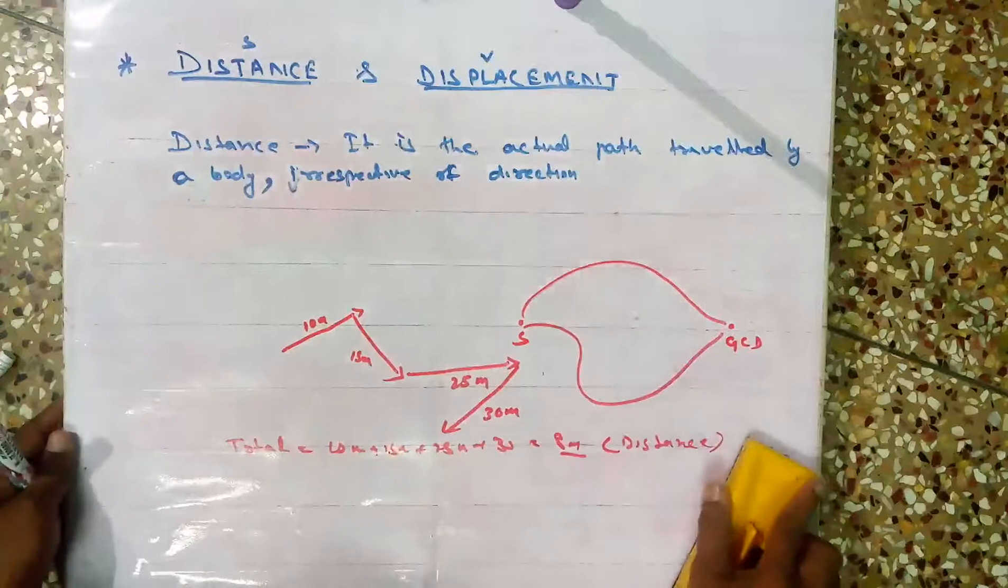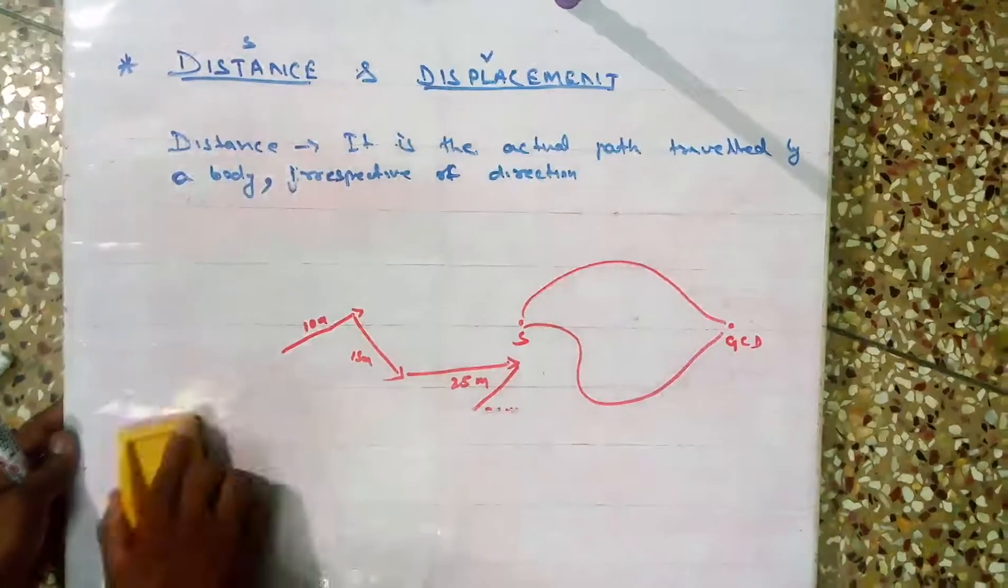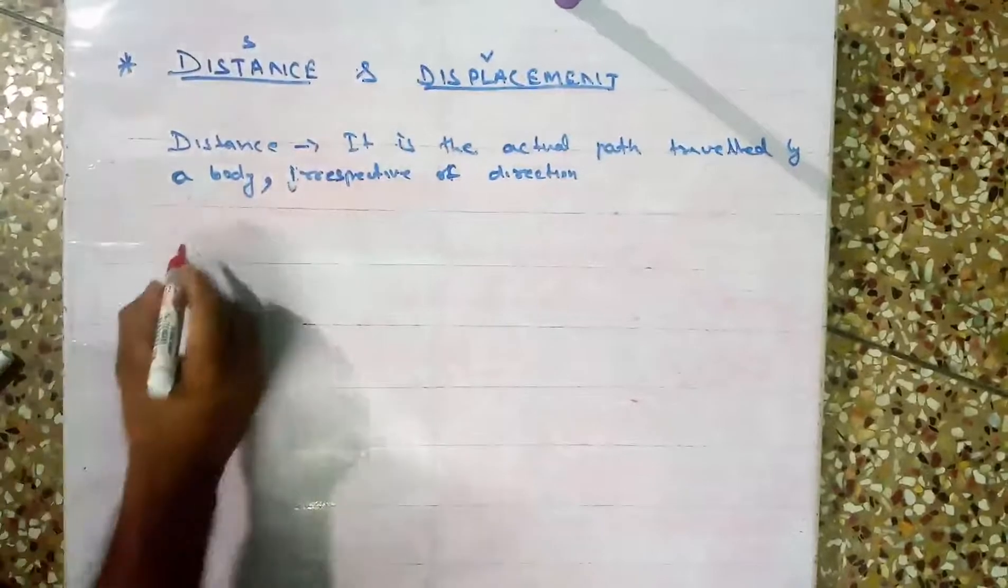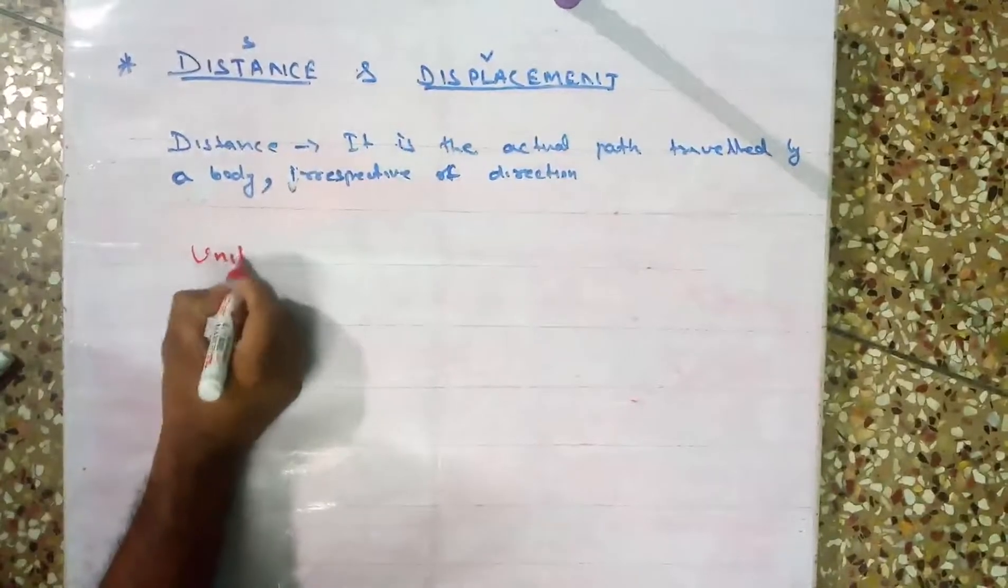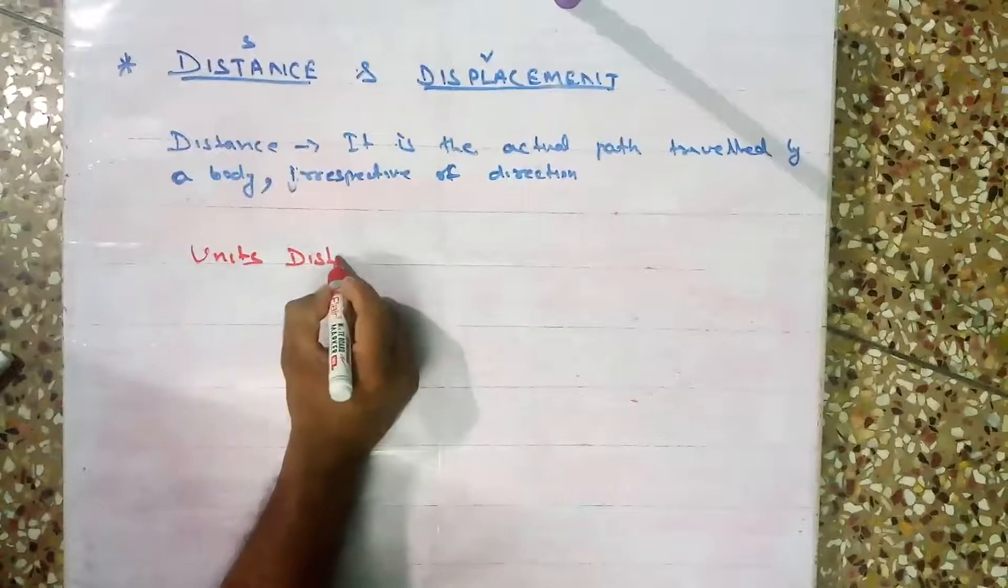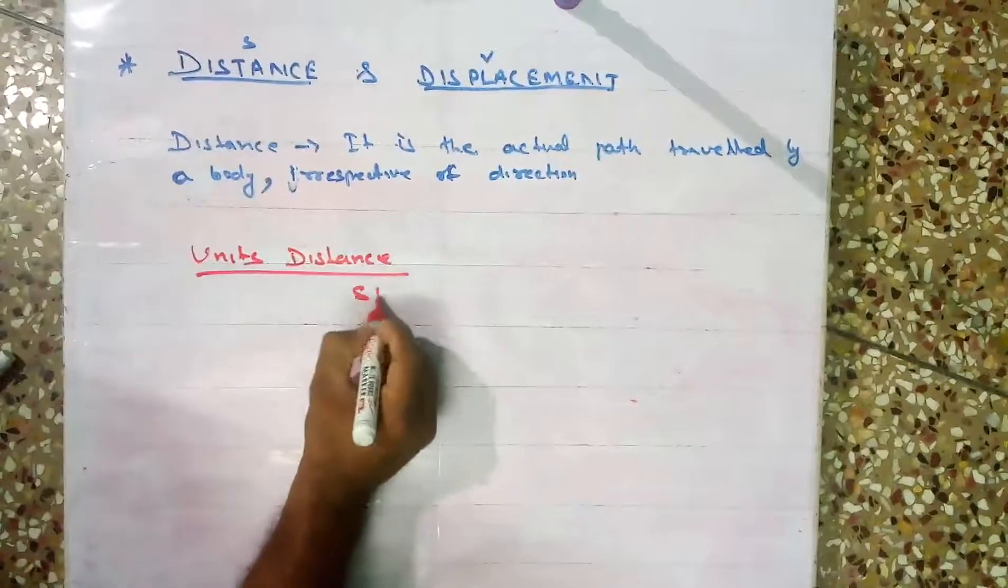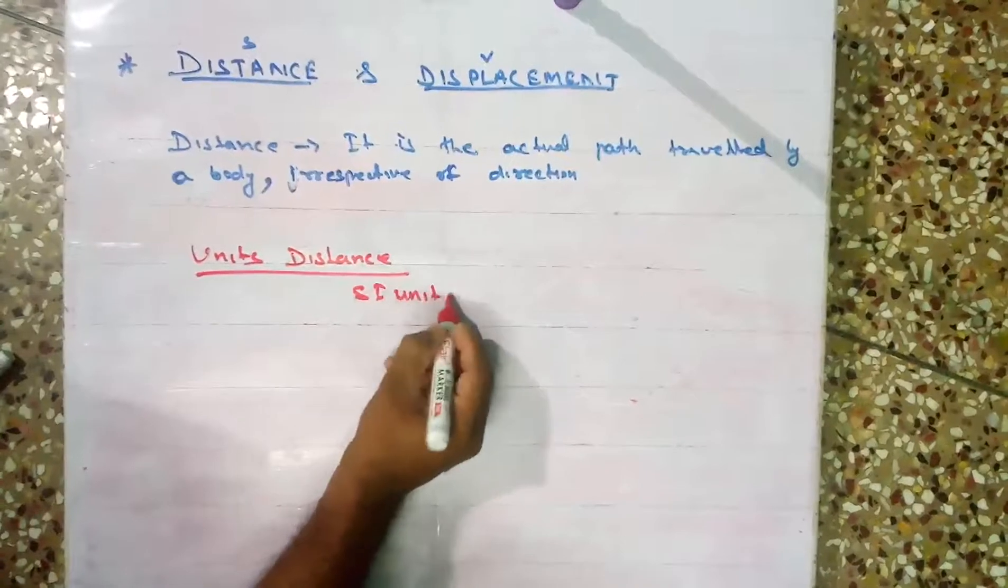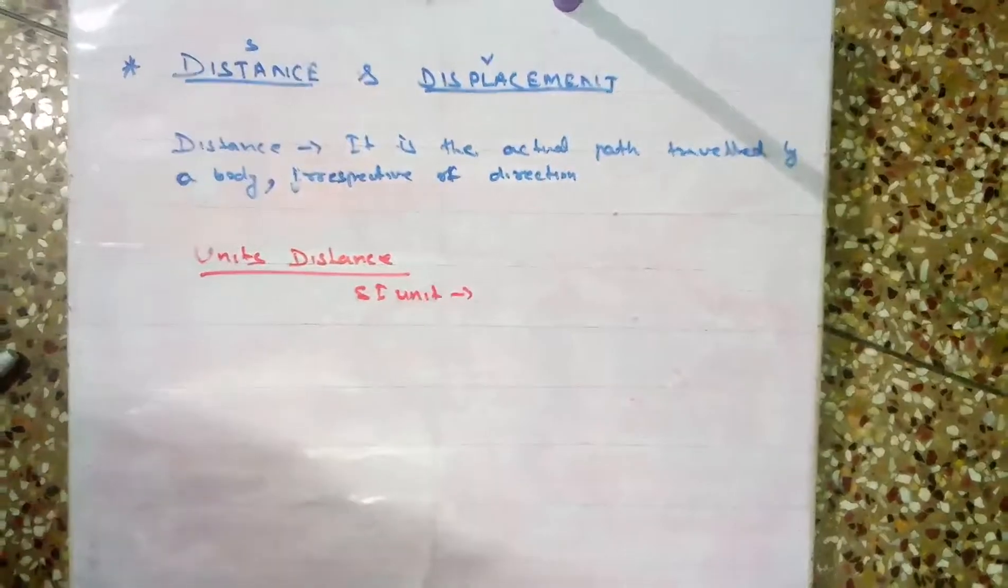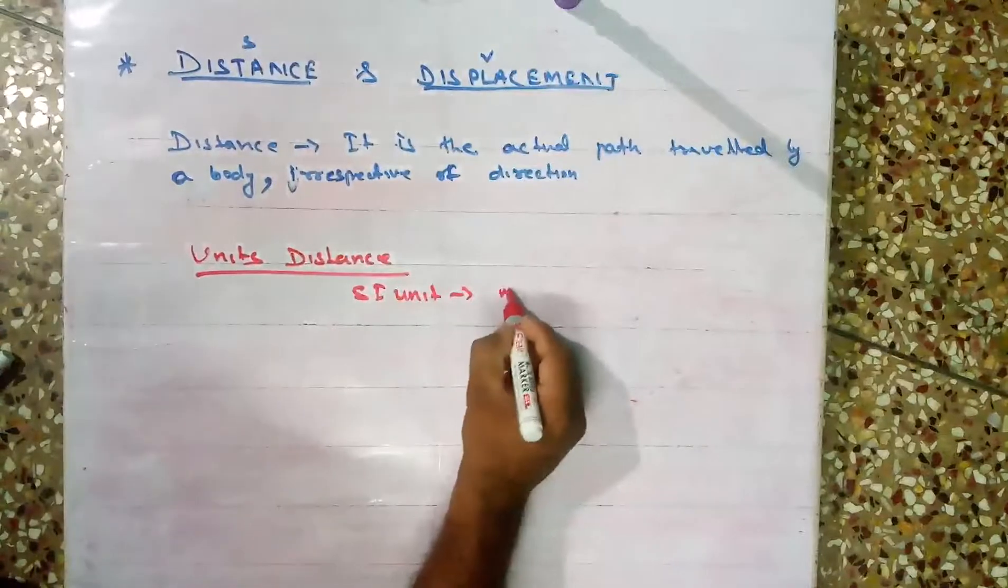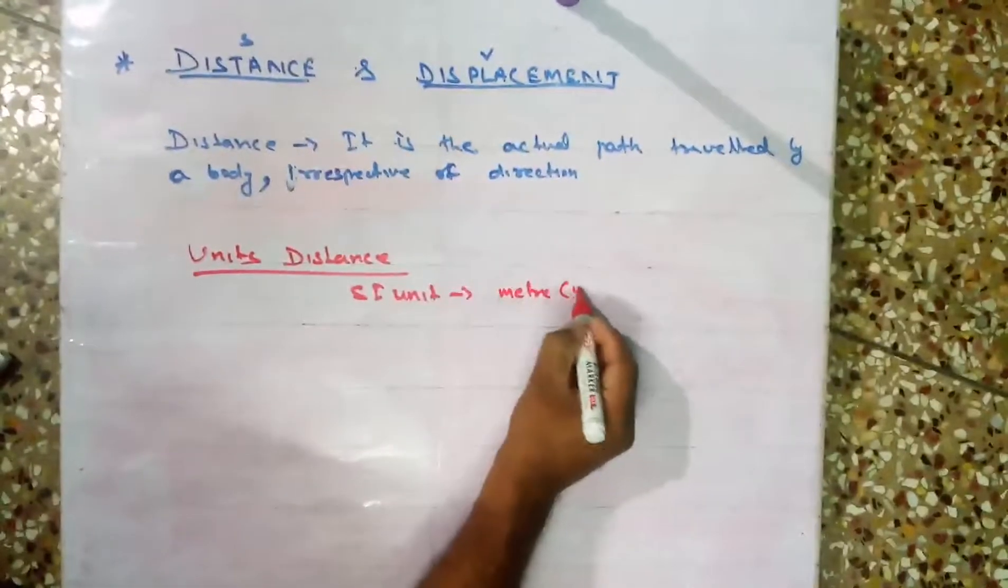Now its unit - unit of distance. SI unit will be meter, symbol M.